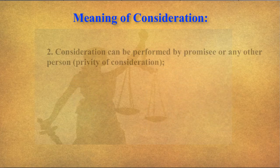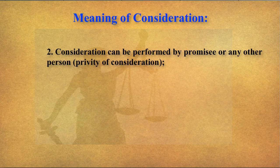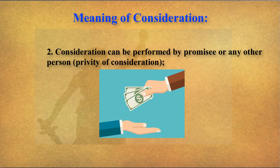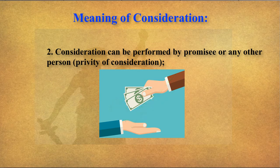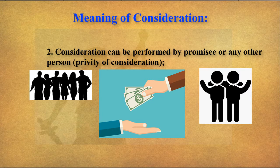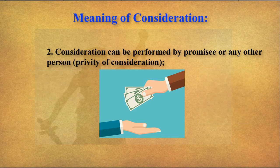The second point is that consideration can be performed by the promisee or any other person — that is the principle of privity of consideration. For example, you promised to pay a certain amount, but if you didn't pay, someone else on your behalf — your relative or friend — can pay that amount, and that will be okay. So your relatives or friends can also pay. That is known as the principle of privity of consideration.